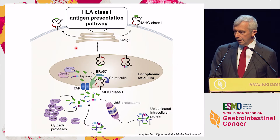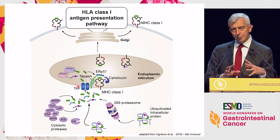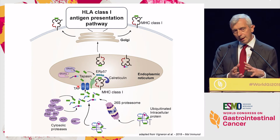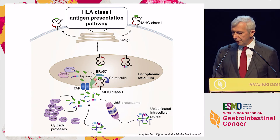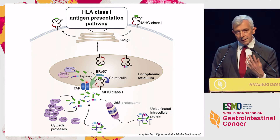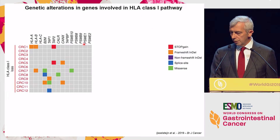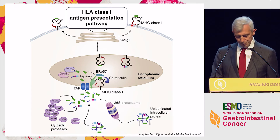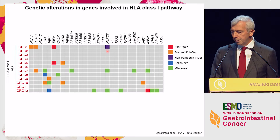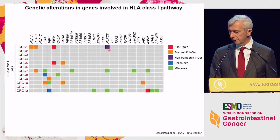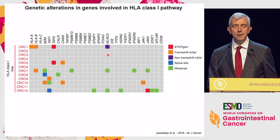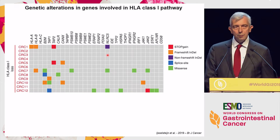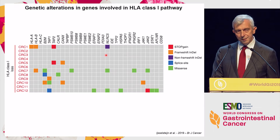These three — TAP1, Calreticulin, and ERP57 — are chaperones needed to stabilize the HLA class I heavy chain before the peptide is brought in and locked into the groove, and then beta-2 microglobulin is added. The heavy chain then detaches from TAP1, a resident protein of the endoplasmic reticulum, and moves to the cell surface. Other mutations affect subunits of the proteasome or its regulatory subunits, a master-switch transcription factor for HLA class I expression, and genes implicated in interferon gamma receptor signaling. So there is a wide array of genetic causes to HLA class I defects at the cell surface.